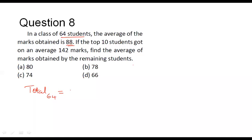That is 88 is the average, 64 people under consideration, so 88 times 64. We can see that 88 times 64 is 5632. So this is the total marks obtained by all these 64 students.